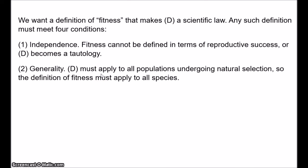Second, generality. We want D to be a general law that applies to all populations undergoing natural selection, so the definition of fitness has to apply to all species. Recall Kettlewell's moths, where industrial pollution made the trees go black, so moths with dark wings were better camouflaged and dark wings spread through the population. But we can't define fitness in terms of having a dark colour, because that would only be true of that specific population — D would become inapplicable as a general law. We need a definition of fitness that applies across the board.